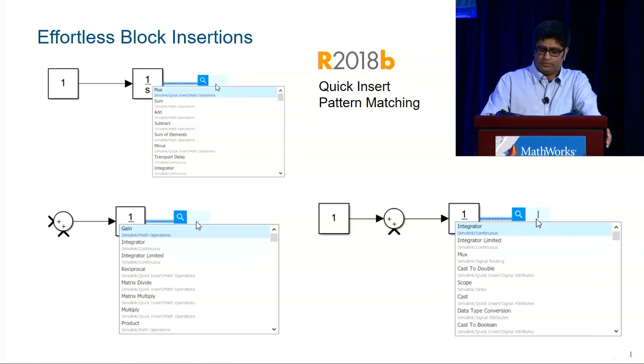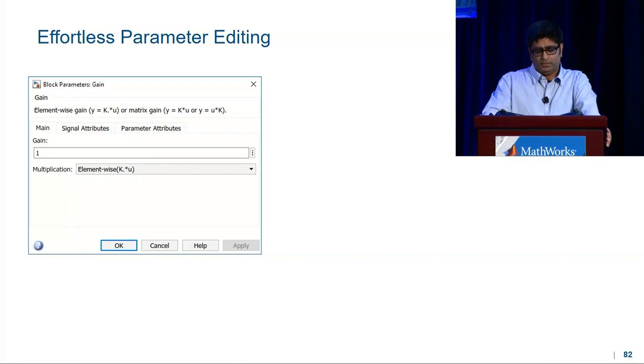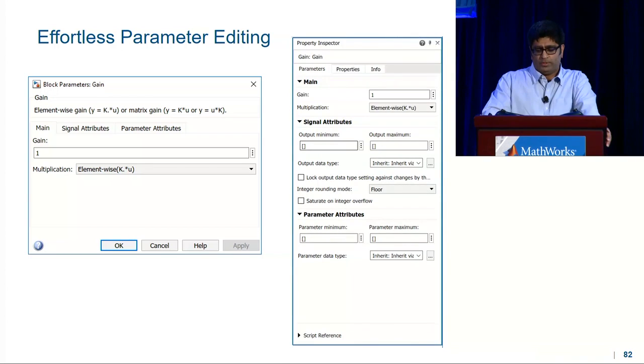Now this is because quick insert algorithm is using patterns from our examples, and these are the most common patterns in our models. You can point it to your models so it can detect your patterns as well. The next stop on our tour is parameter editing. And this is by far my favorite stop.